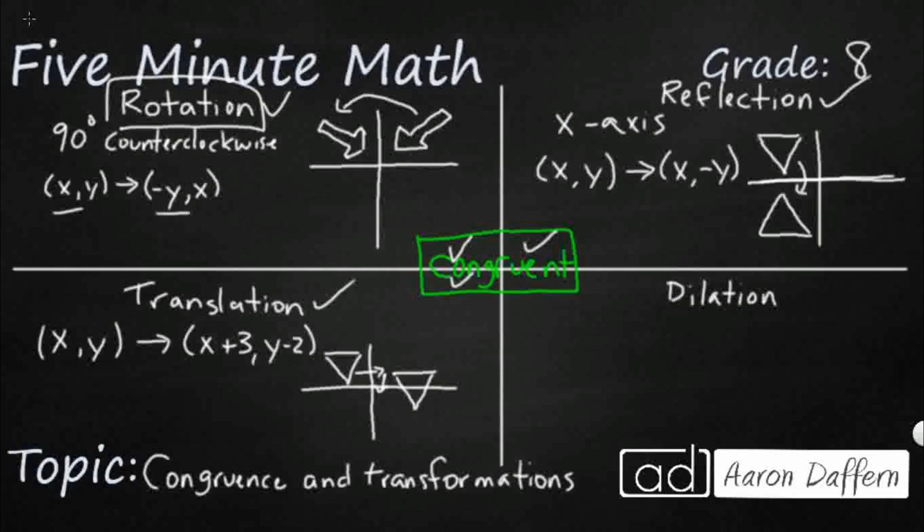Dilation, though, that's when you start using scale factors. So let's say we do this, right? So x, y gets translated to, let's say, 1 half x and 1 half y. So we're keeping it similar. But as you can tell, we're going to shift how big it is.